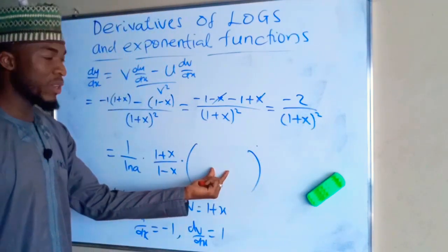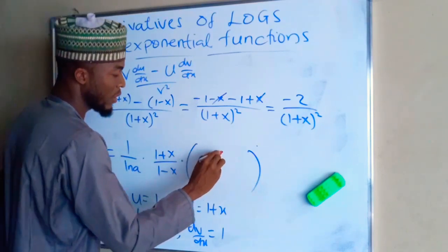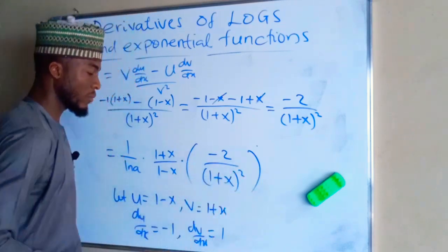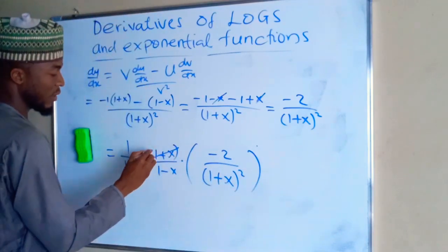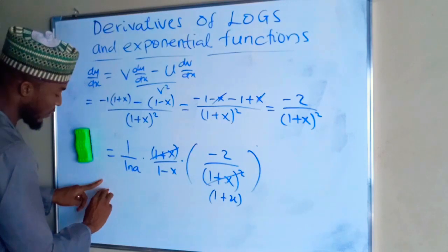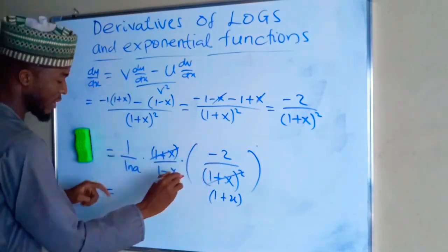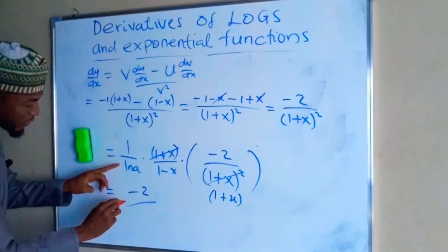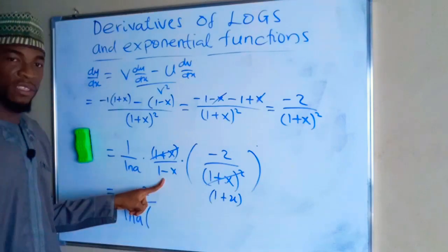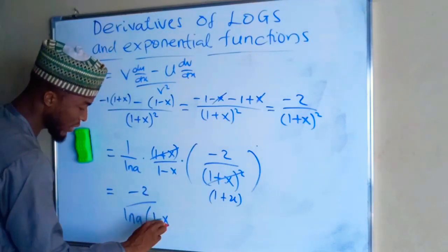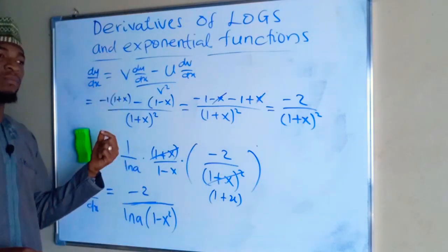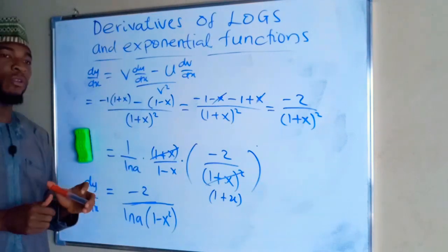So we bring that down: the derivative is minus 2 over (1 plus x) squared. Substituting back, (1 plus x) cancels with one factor in the denominator, giving 1 times negative 2, which is negative 2, all over natural log of a times (1 minus x squared), using the difference of squares. So this is the derivative of log base a of (1 minus x)/(1 plus x), equal to negative 2 over natural log of a times (1 minus x squared).